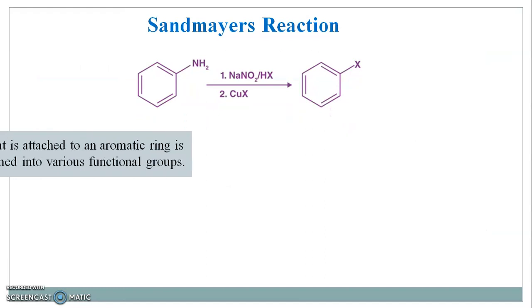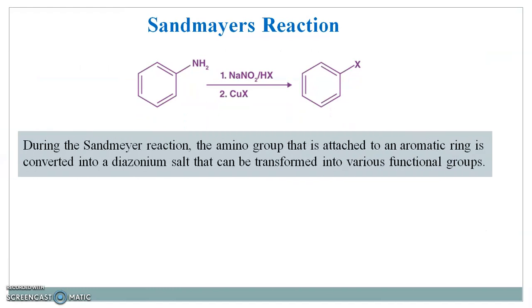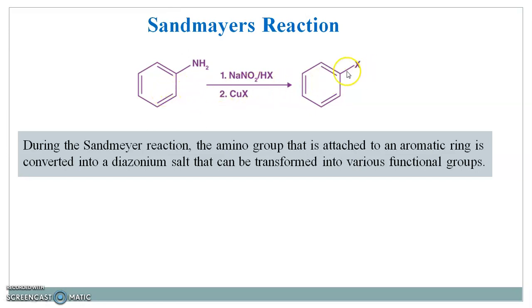Here is the overall Sandmeyer reaction. During the Sandmeyer reaction, the amino group that is attached to the aromatic ring is converted to a diazonium salt, which can then be transformed into various functional groups.